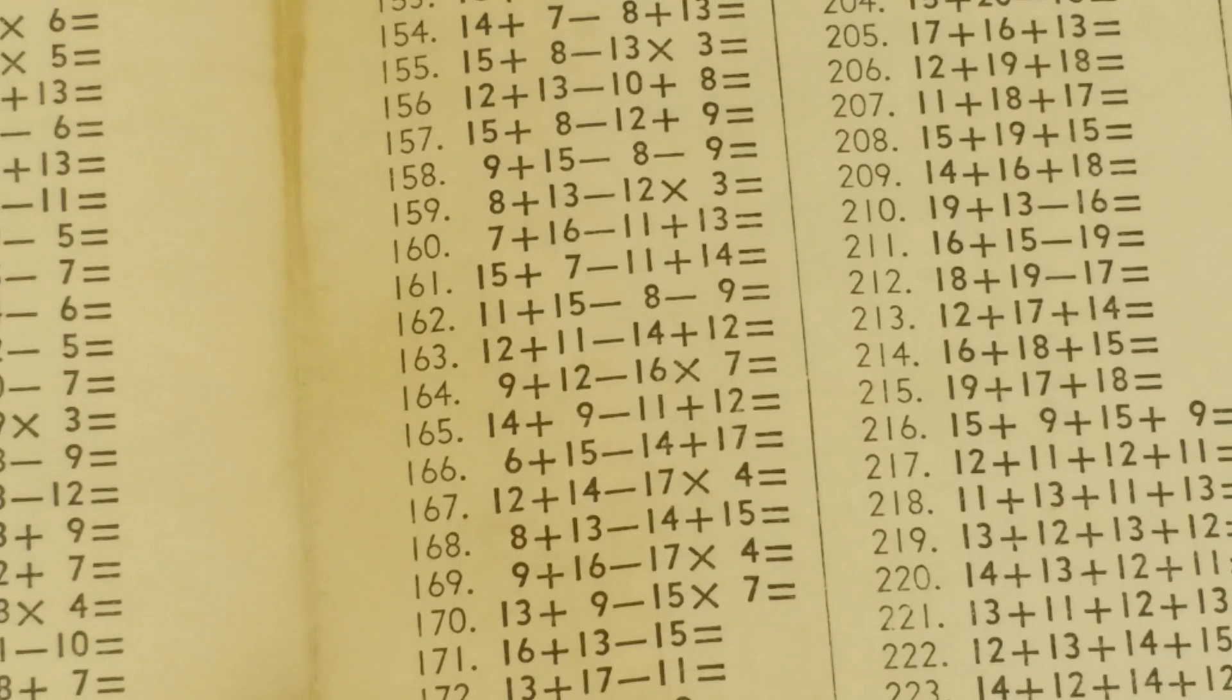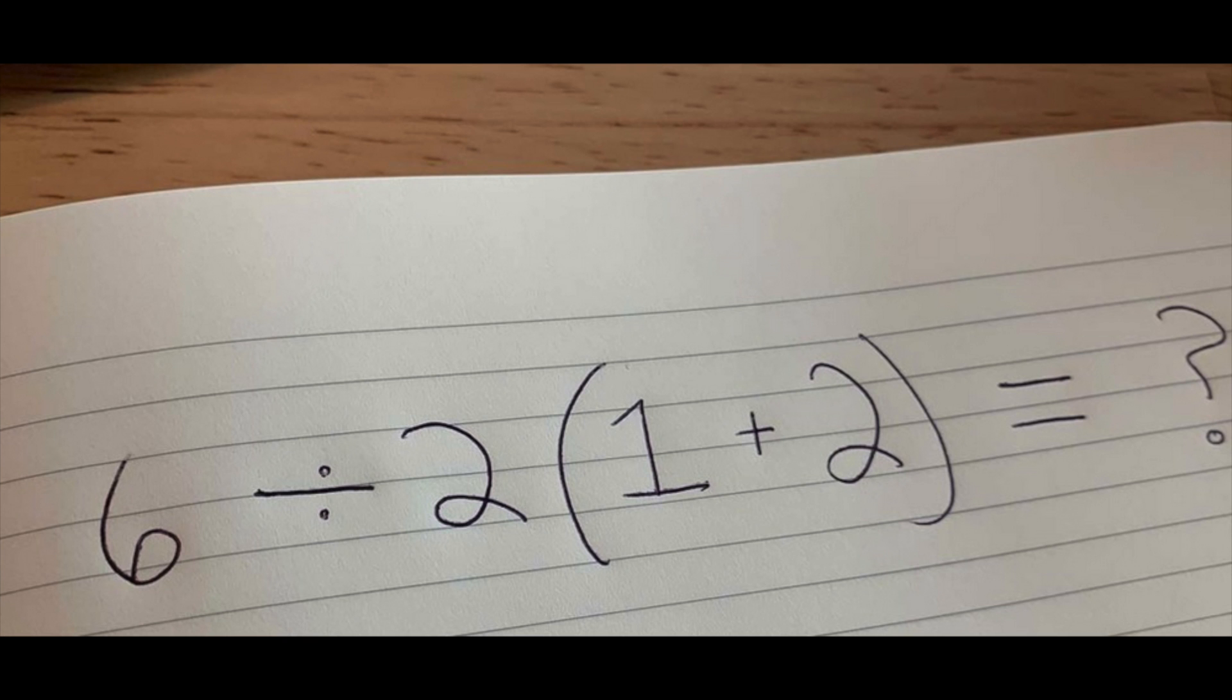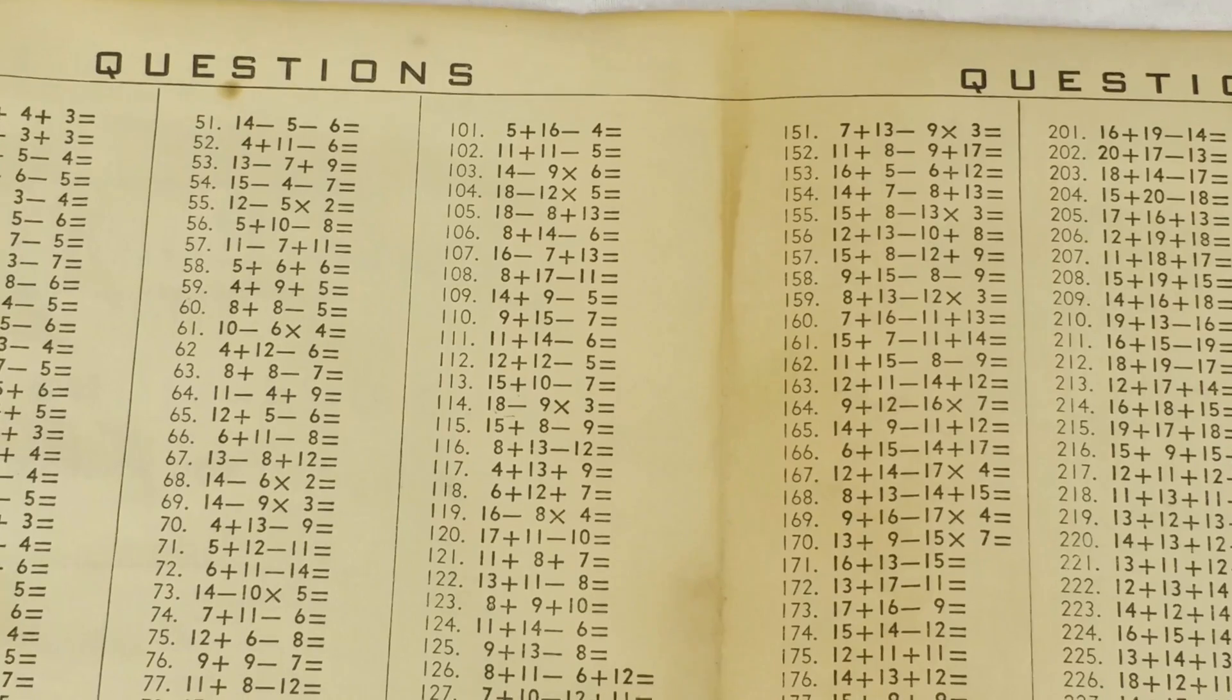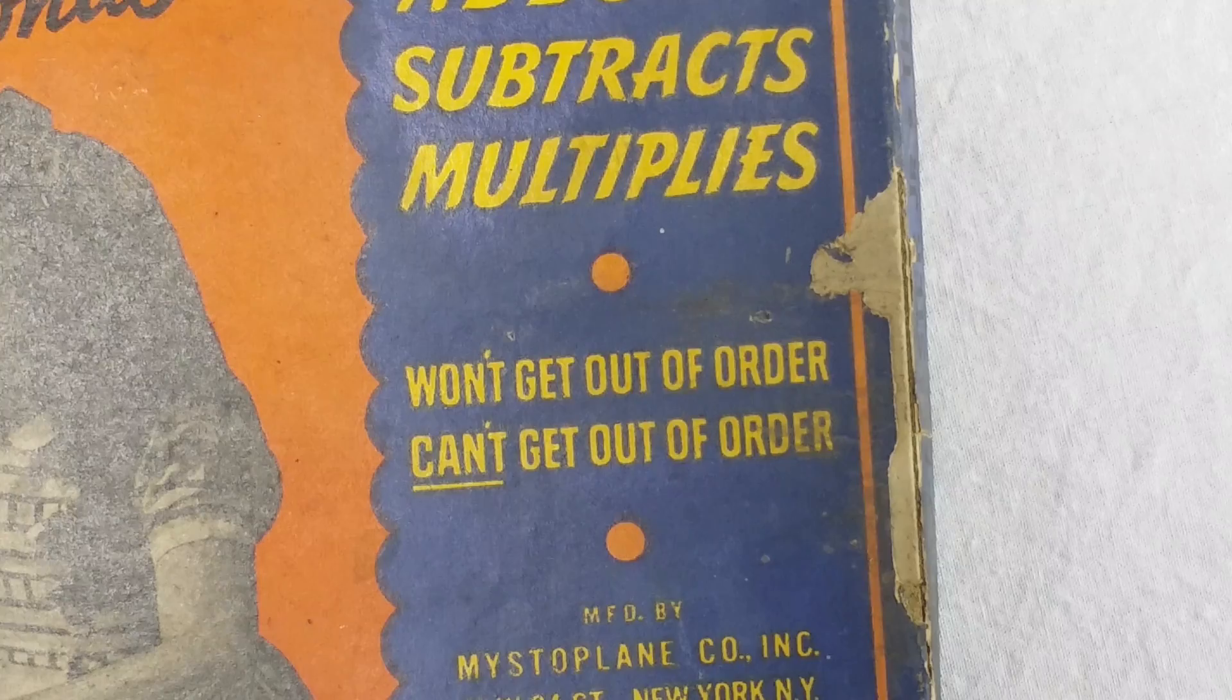And look how these things mix the operations together. Check out problem number 164: 9 plus 12 minus 16 times 7. This is one of those stupid clickbait news articles - 'Here's a fourth grade math problem that stumped the internet.' These things always boil down to rules about order of operations. Like you're supposed to do multiplications and divisions first, and then additions and subtractions. And if you do it in a different order, you get a different answer. And guess what? The writers of the Add-O-Master Junior quiz book didn't use the standard order of operations.